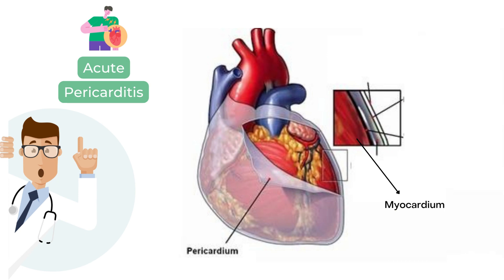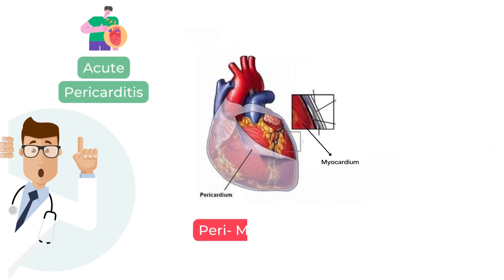Another difficulty is that sometimes pericarditis can be accompanied by inflammation of the underlying muscle as well, causing a condition called perimyocarditis, which would make the findings potentially even more confusing on the ECG strip.